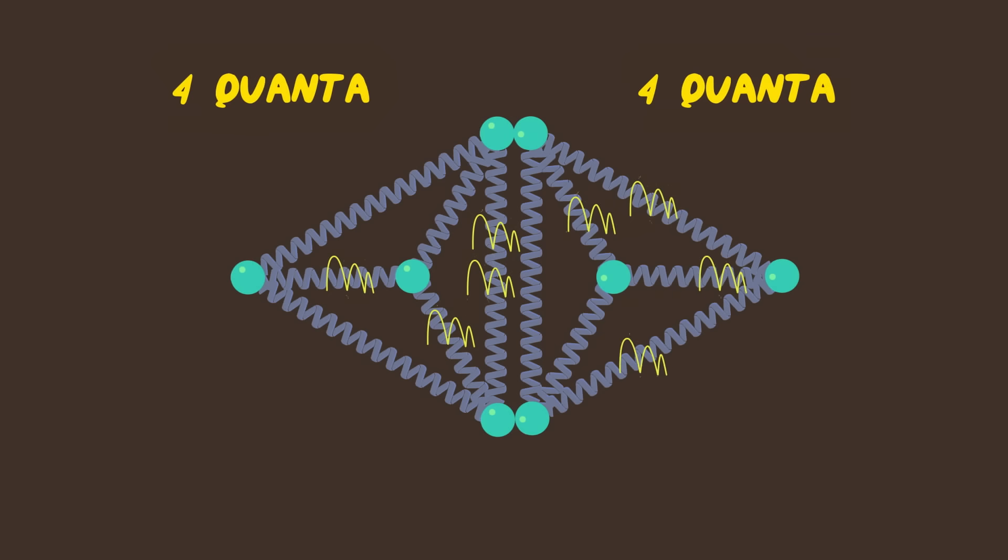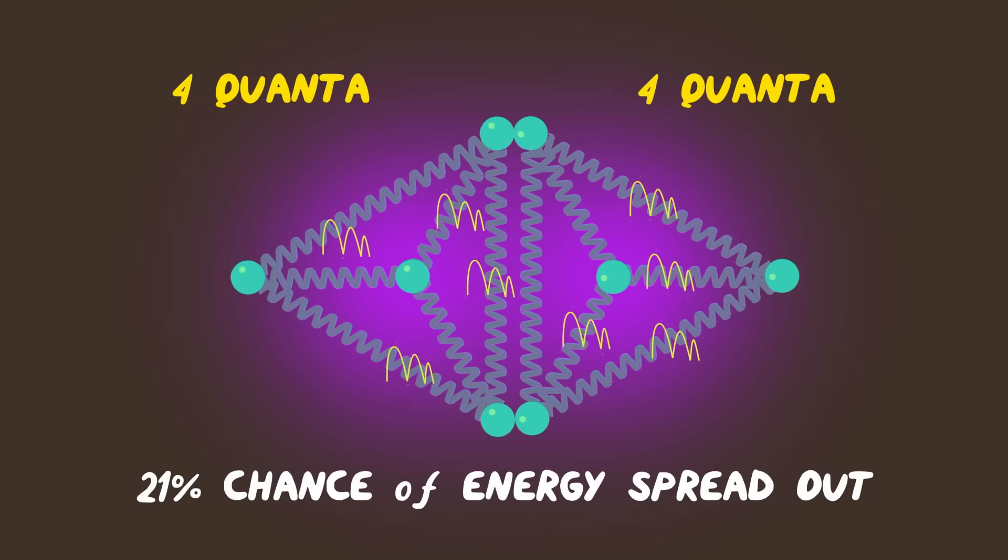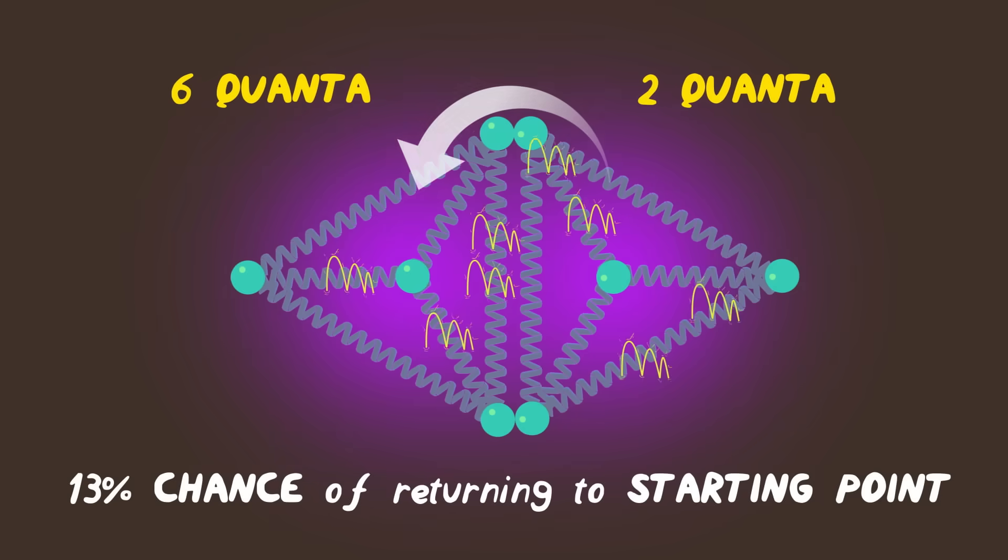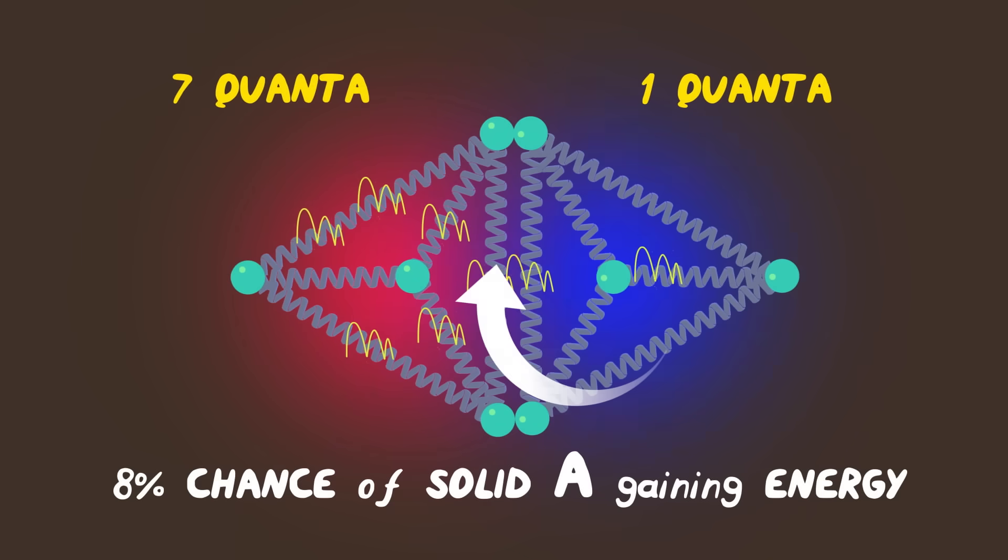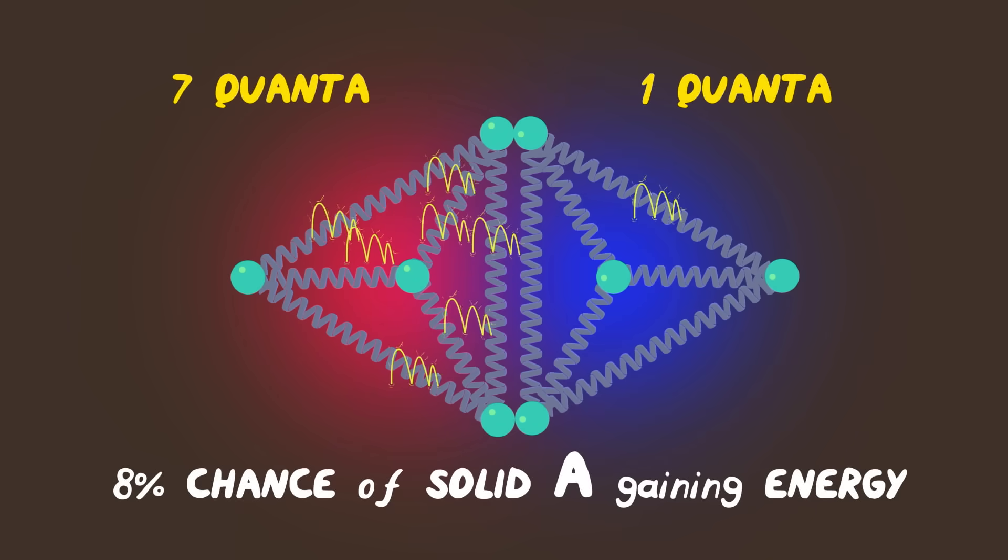Because of the distribution of microstates, there's a 21% chance that the system will later be in the configuration in which the energy is maximally spread out. There's a 13% chance that it'll return to its starting point, and an 8% chance that A will actually gain energy.